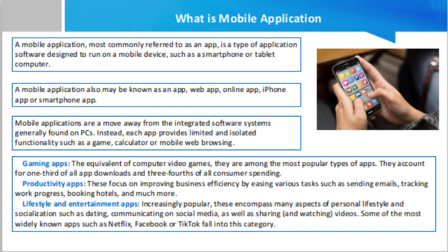Other app types include mobile commerce (m-commerce) apps used to purchase goods online, such as Amazon and eBay; travel apps that help travelers with booking tours and tickets, maps, geolocation, and travel diaries; and utility apps such as health apps and barcode scanners.